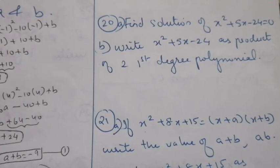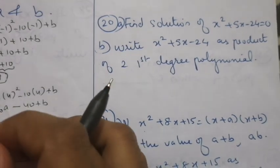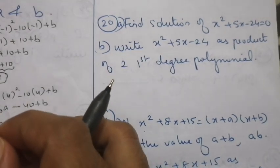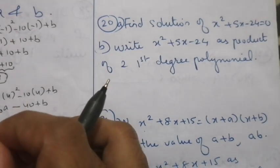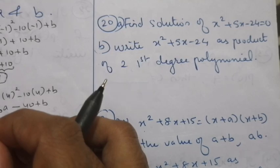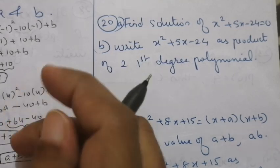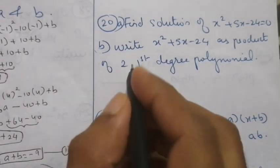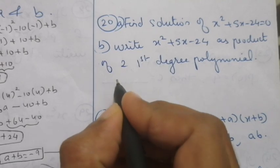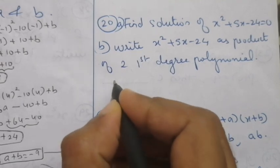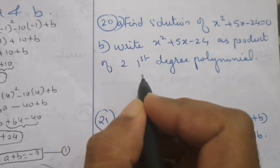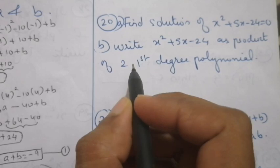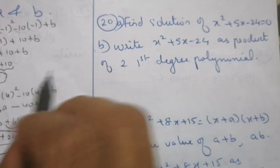Here we have question number 20. Find the solution of x squared plus 5x minus 24 equals 0, and write this as the product of two first degree polynomials. You have to take a, b, c and then find the roots using the quadratic formula.